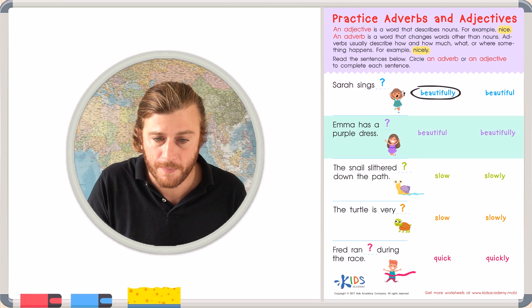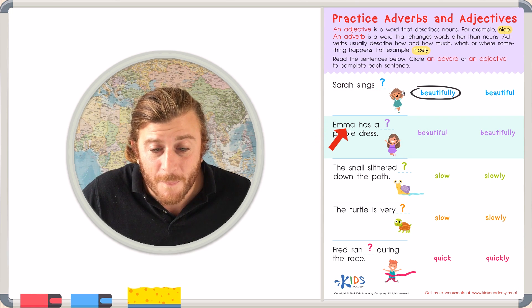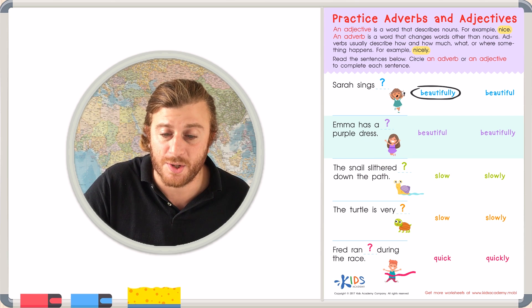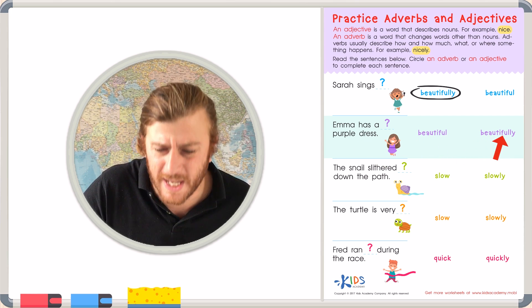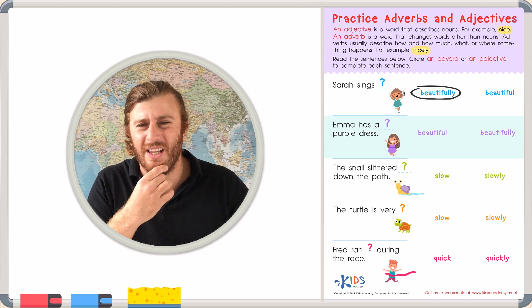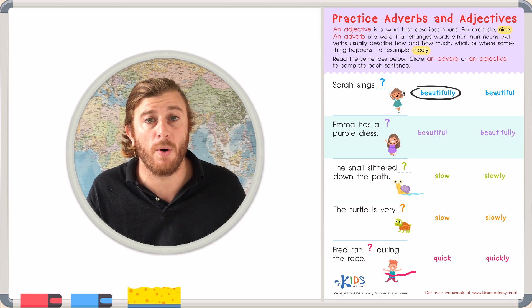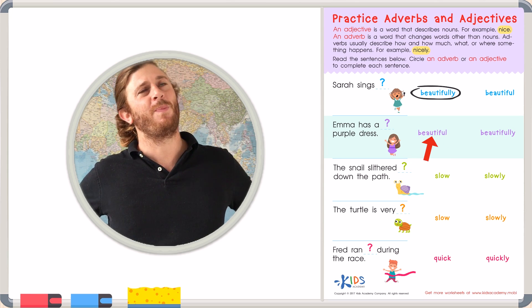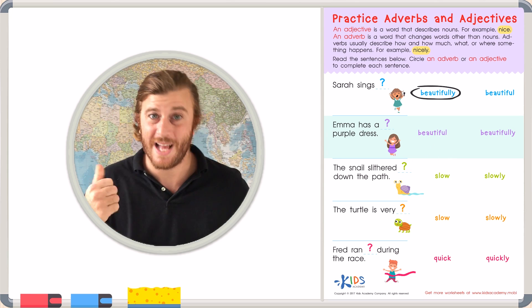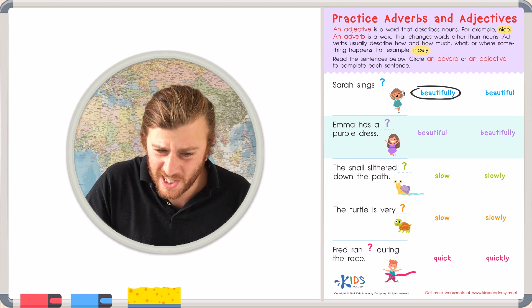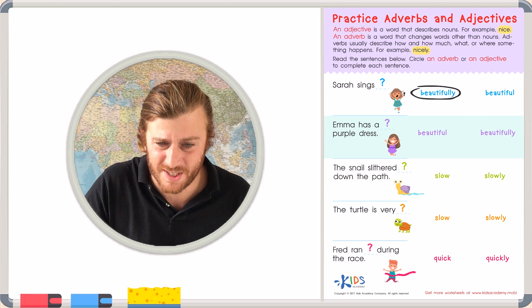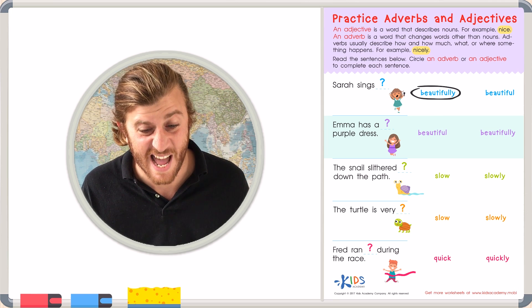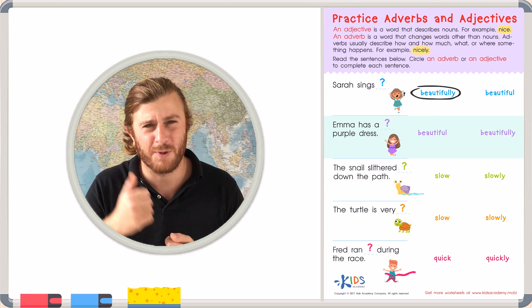Let's look at example number two. Emma has a blank purple dress. And again, we have the answer choices. Beautiful or beautifully. So, let's give it the ear test. Let's try both and see which one sounds best. Emma has a beautiful purple dress. Well, that sounds pretty good. The word beautiful is describing her purple dress. And her purple dress is a noun. Dress is the noun. Beautiful sounds pretty good.